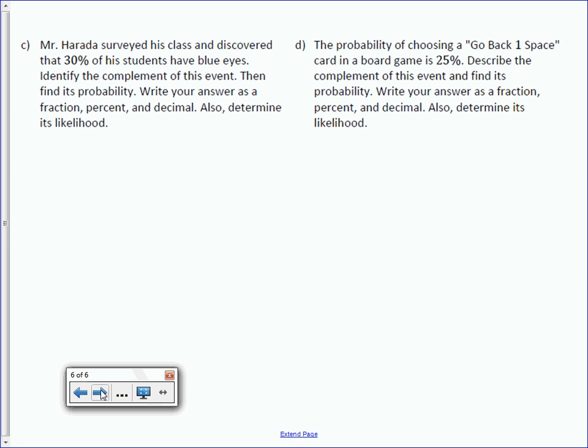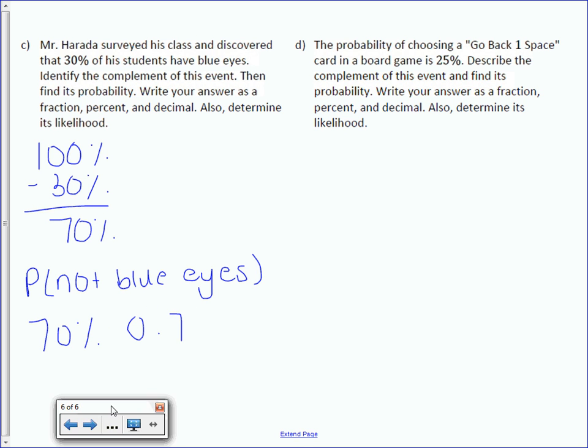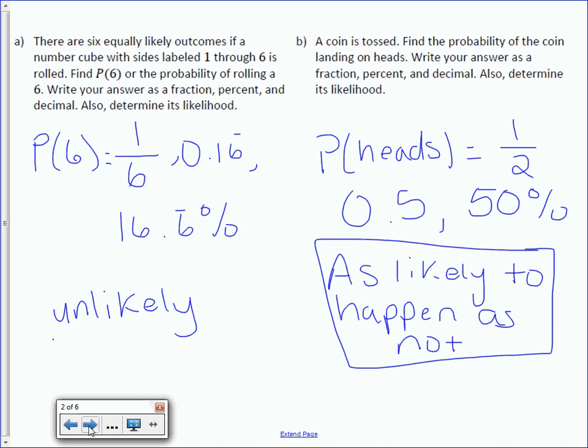Mr. Harada surveyed his class to discover that 30% of his students have blue eyes. Identify the complement of this event. Then find its probability. Write your answer as a fraction, percent, and decimal. Also determine its likelihood. Well, an event and its complement add up to 100%. So we just have to take 100% and subtract the 30%, and we get our probability of 70%. And what we're finding is the probability of not blue eyes, which we know is 70%, 70% or 0.7 or 70 over 100, which we can reduce by dividing by 10. So we would get 7 over 10. The likelihood, we go back to our chart. 70% is somewhere over here, which means it is likely.